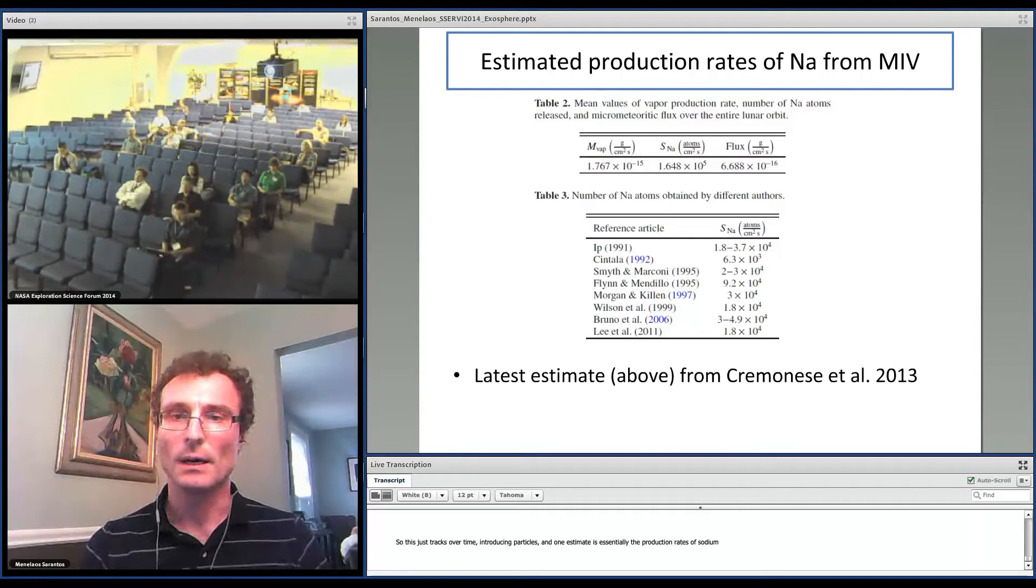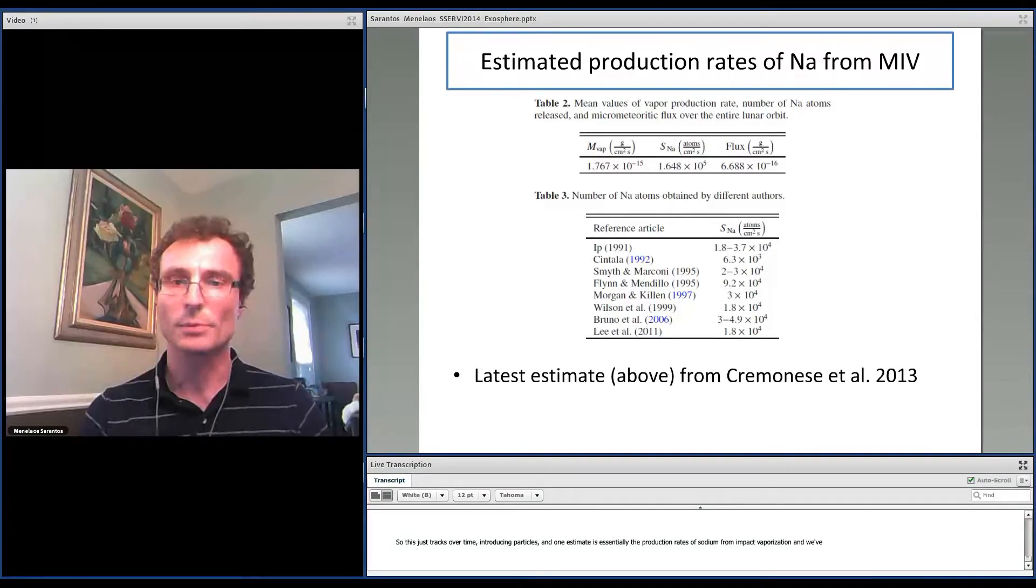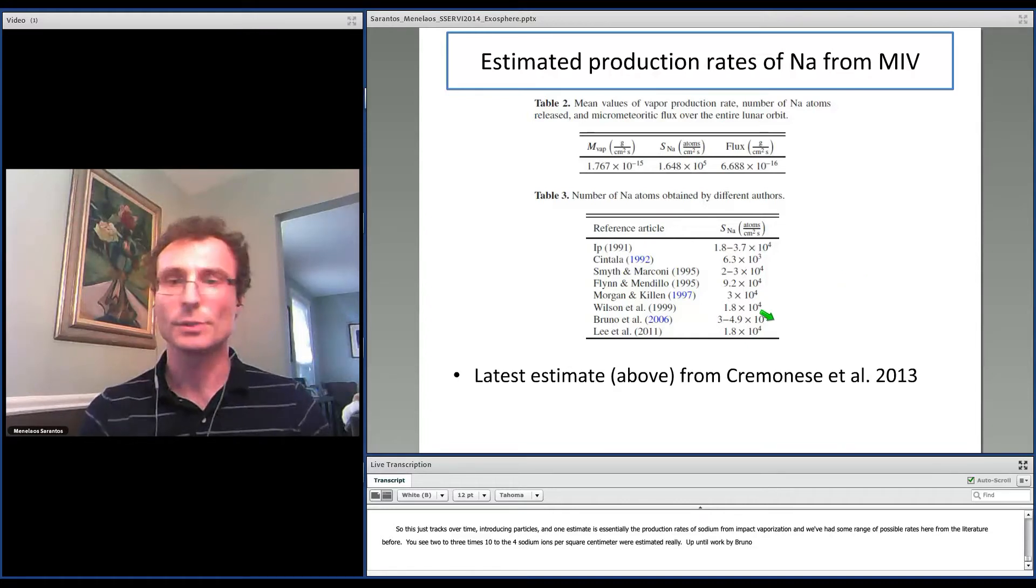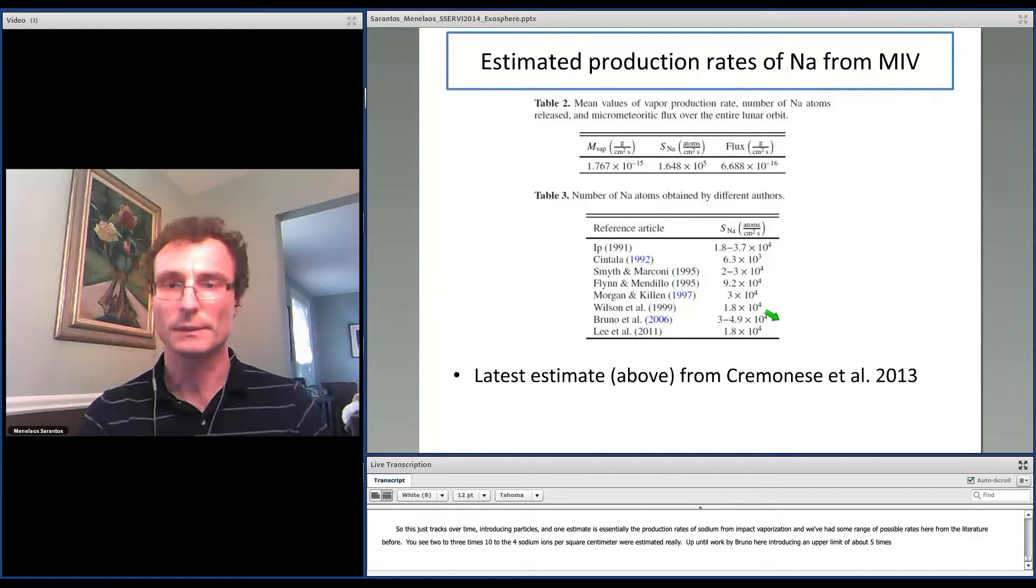One estimate that we need is essentially the production rates of sodium from impact vaporization. We've had a range of possible rates here from the literature before. You see 2-3×10⁴ sodium atoms per square centimeter per second were hypothesized or estimated, up until work by Bruno here introducing an upper limit of about 5×10⁴.